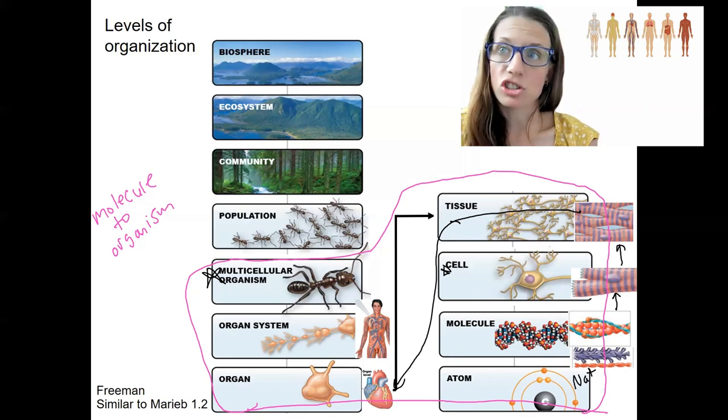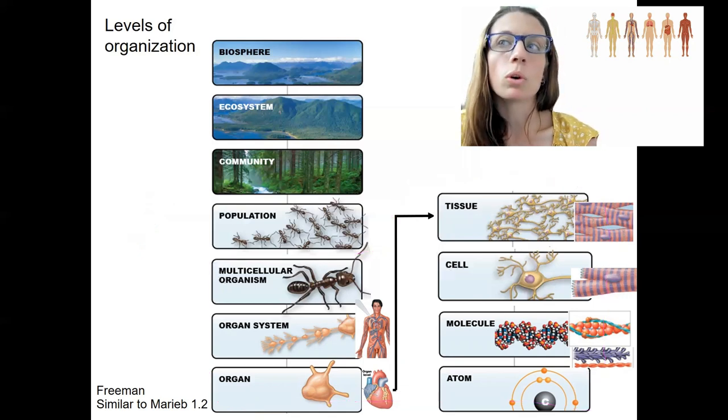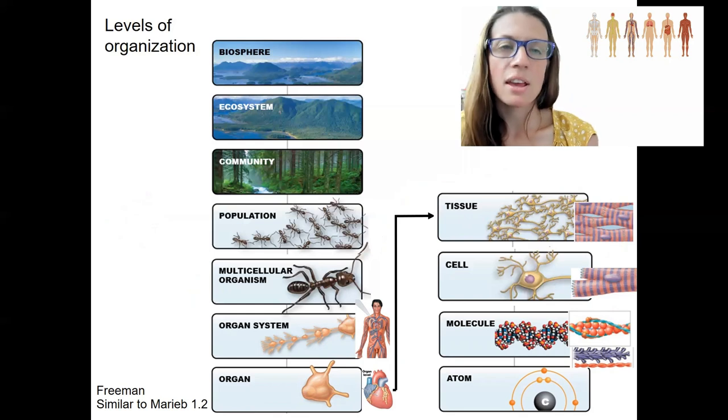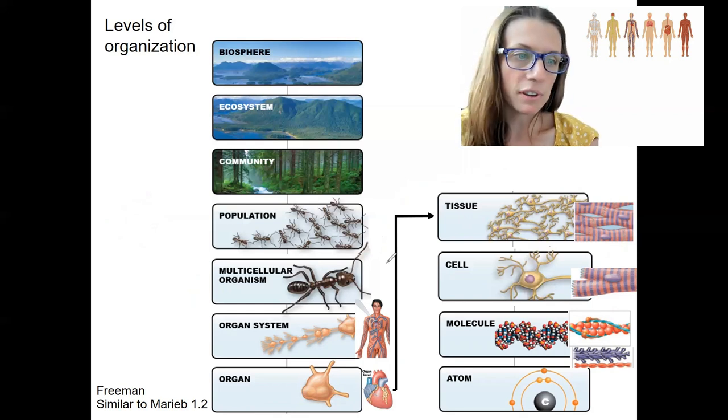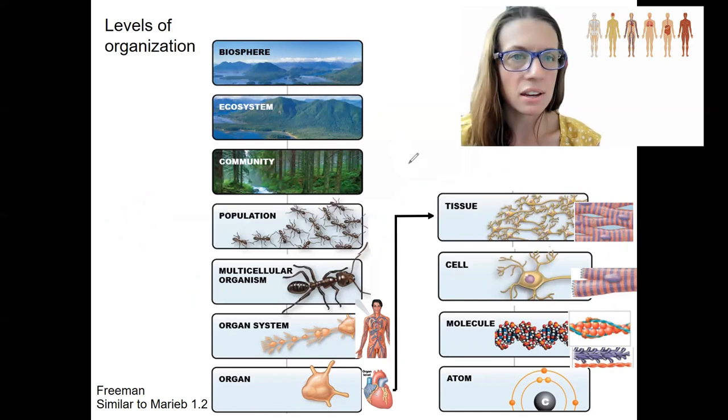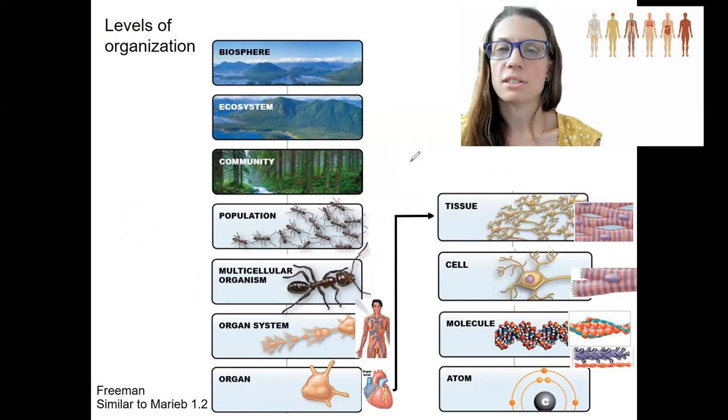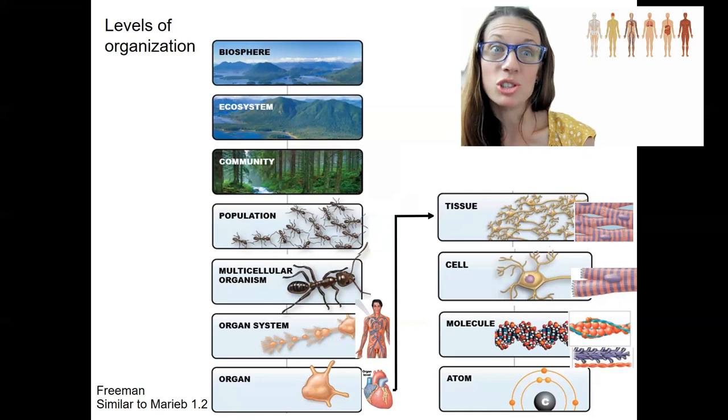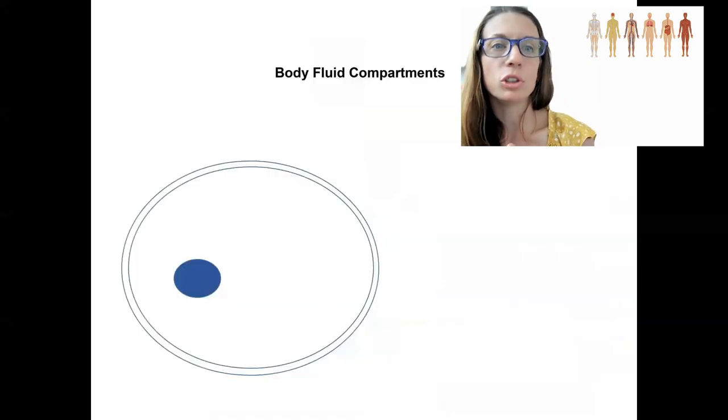So that's levels of organization. The second part to organization is I want to provide an example of what I talked about before with boundaries. At all these different levels, we've got to have a way to separate it from other stuff or inside from outside. The example I want to give of this is the one I mentioned before, the cell membrane. And this is able to maintain boundaries related to a lot of stuff. I'm going to talk about fluids right now.